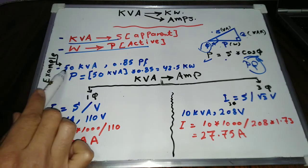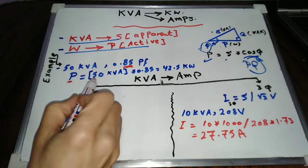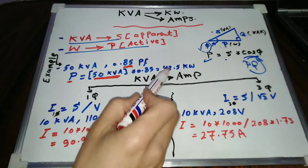If we have apparent power S of 50 kVA and power factor of 0.85, P equals 50 times 0.85, equals 42.5 kW.